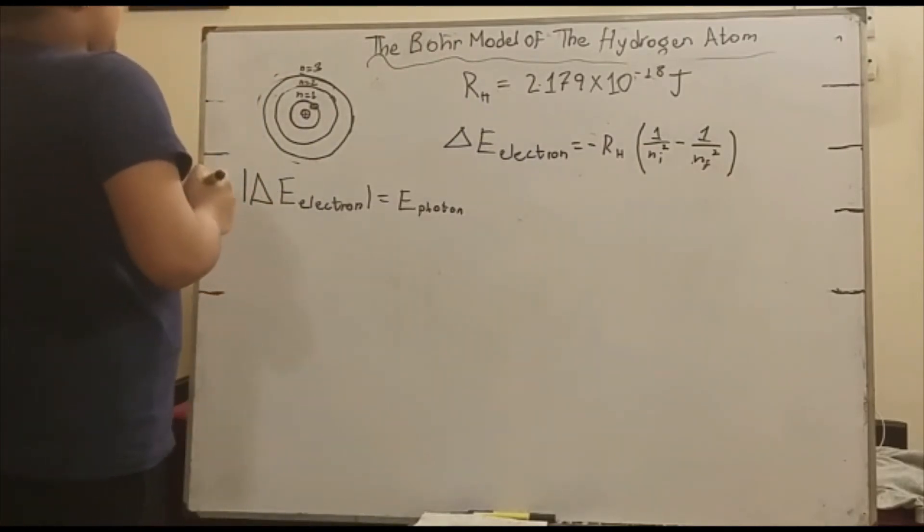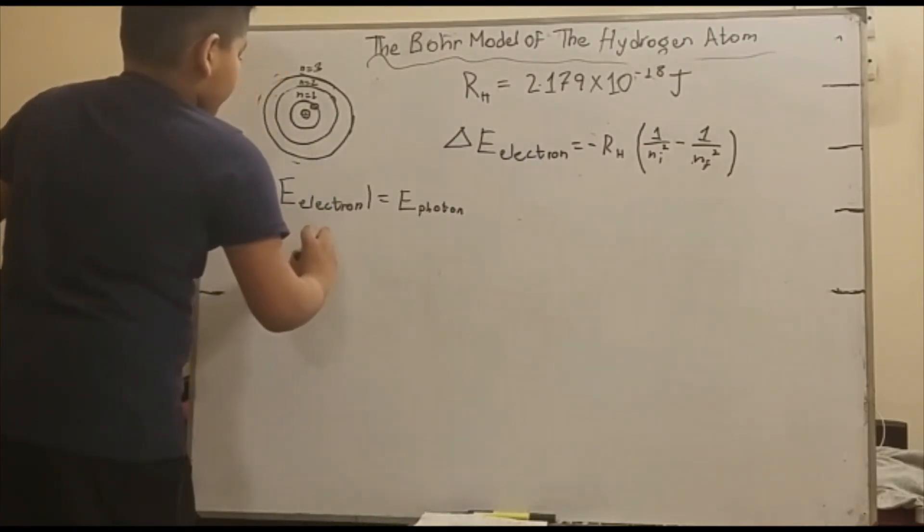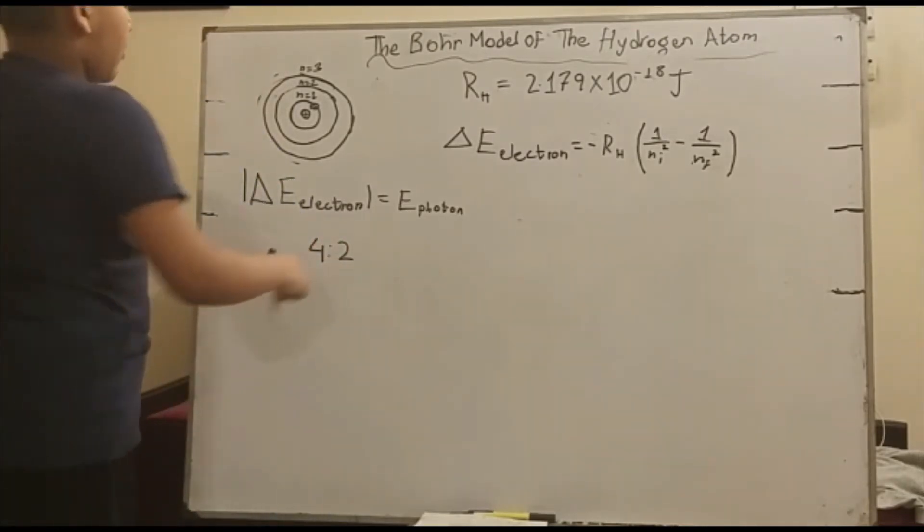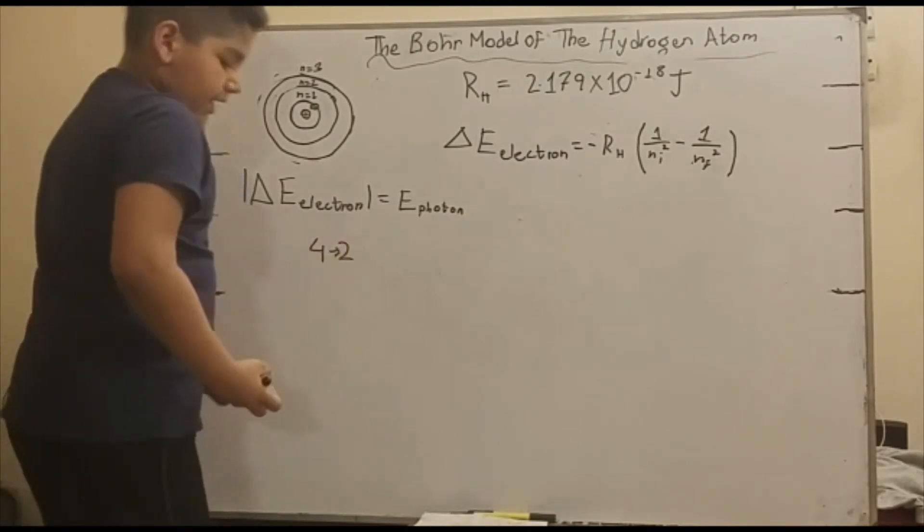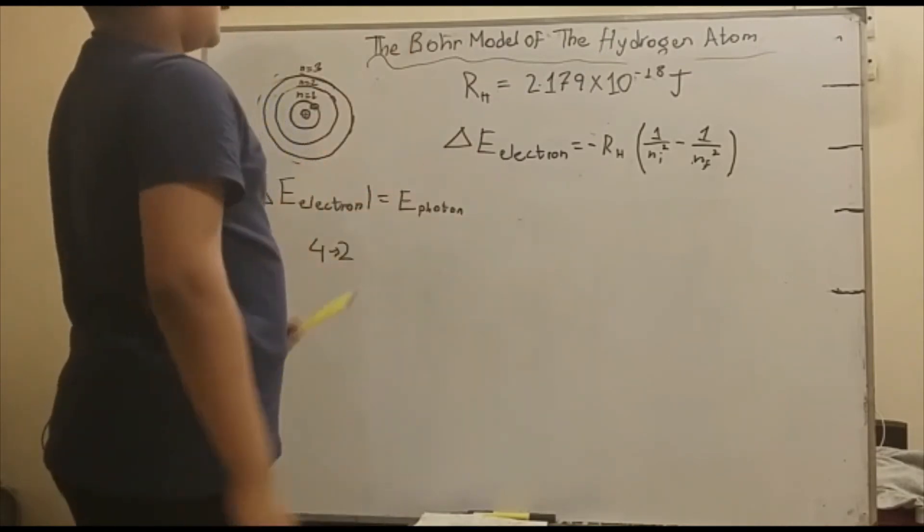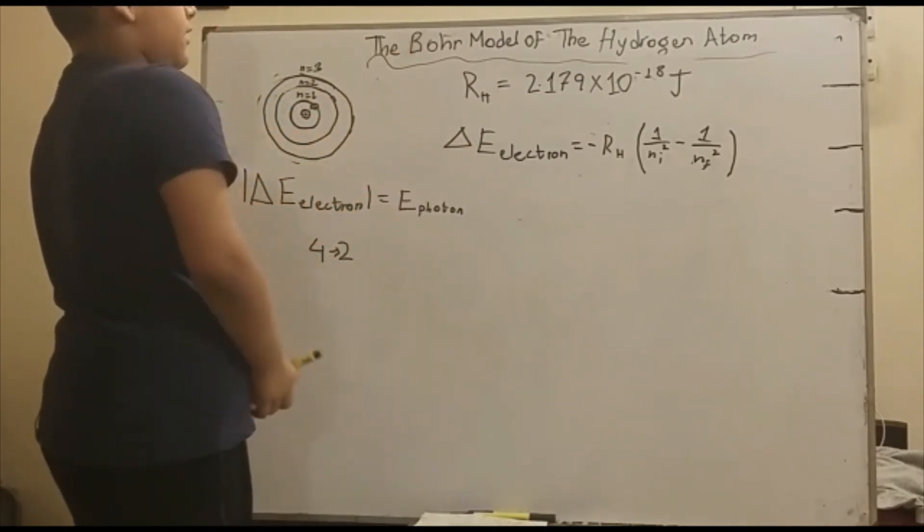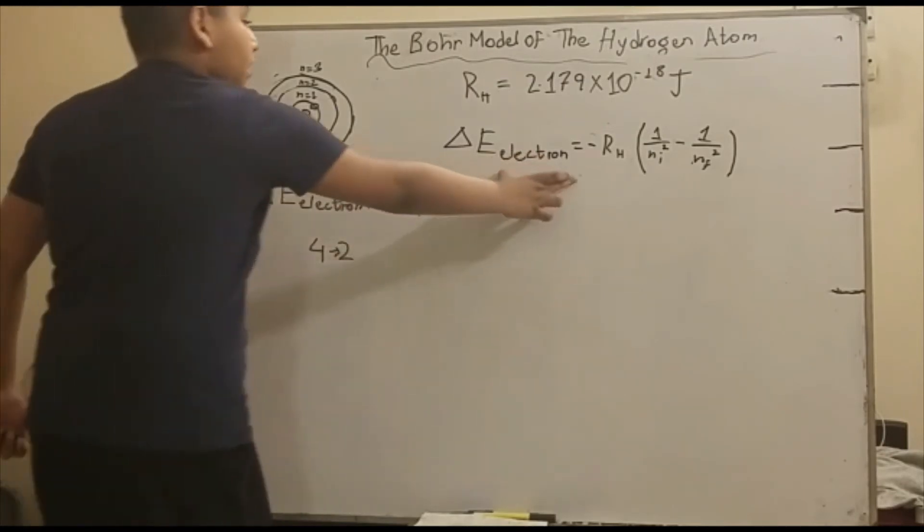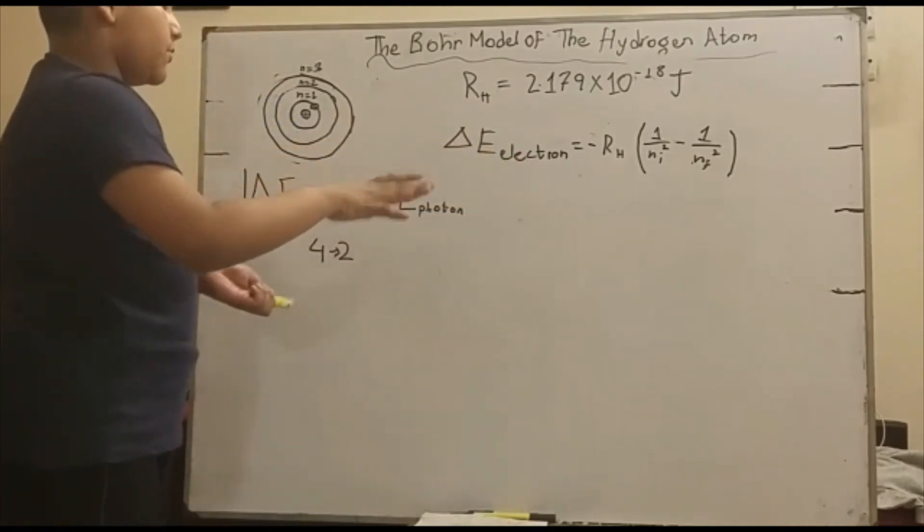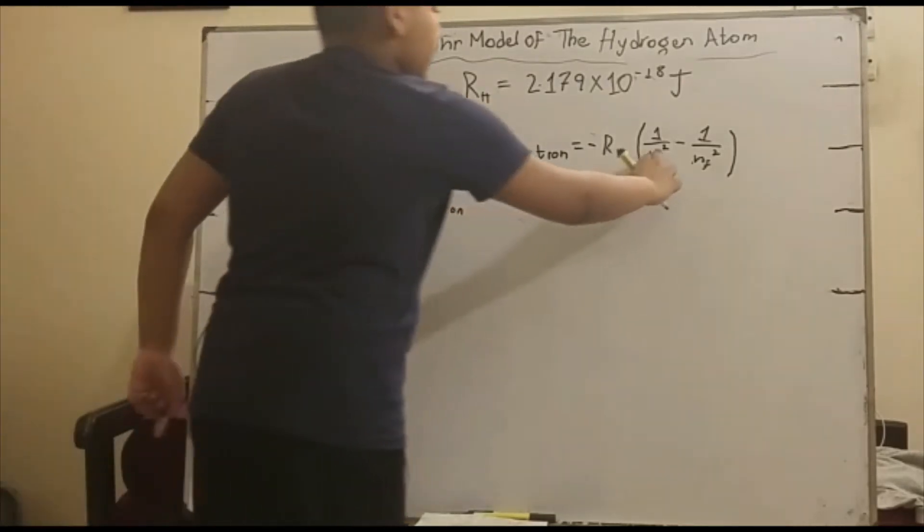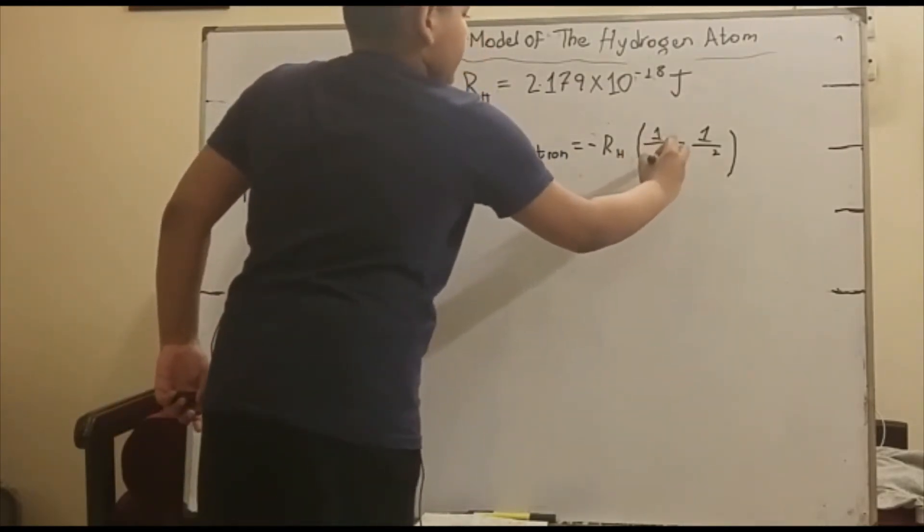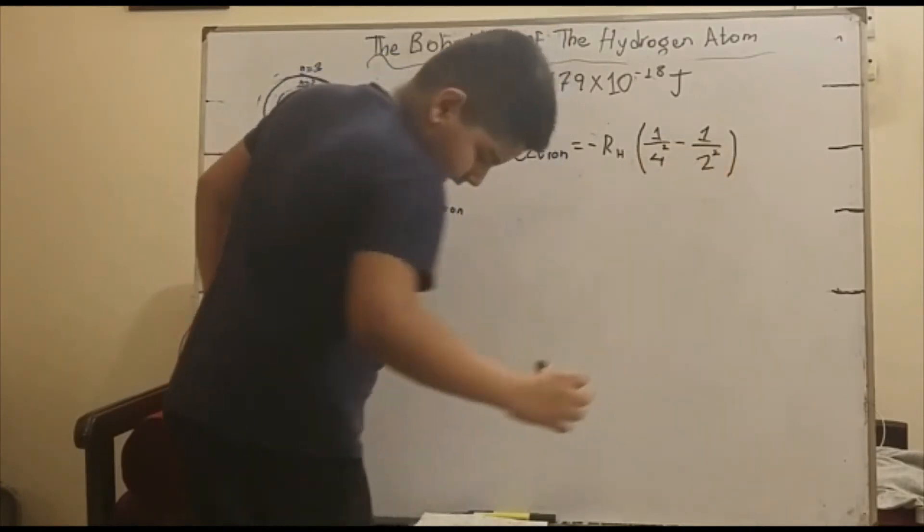So now, let's say the electron goes from energy state 4 to energy state 2. We have to find the photon's energy. Remember, this is the change in energy of the electron, because the change in energy of the electron would be the photon. We wouldn't write the absolute values yet. So let's replace this with the numbers, 4 and 2.